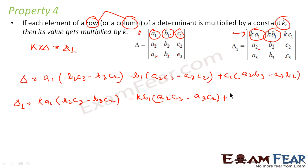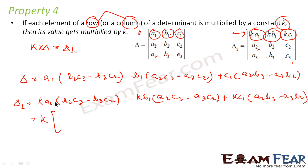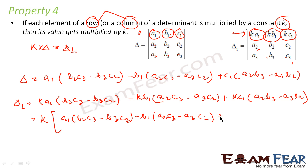Continuing: plus kc1 — we cannot take its row or column, so we take the four remaining elements: a2b3 minus a3b2. Observing the result, we can take k out as a common factor, since every term has k. This gives k into [a1(b2c3 minus b3c2) minus b1(a2c3 minus a3c2) plus c1(a2b3 minus a3b2)].